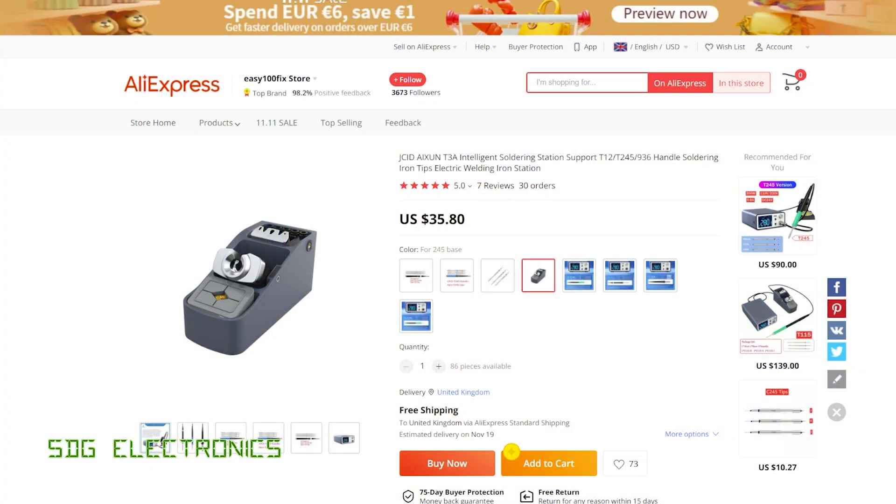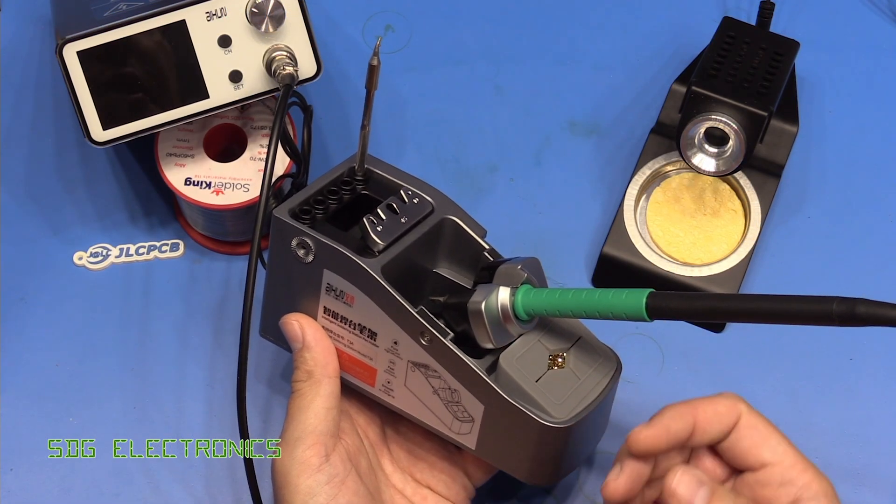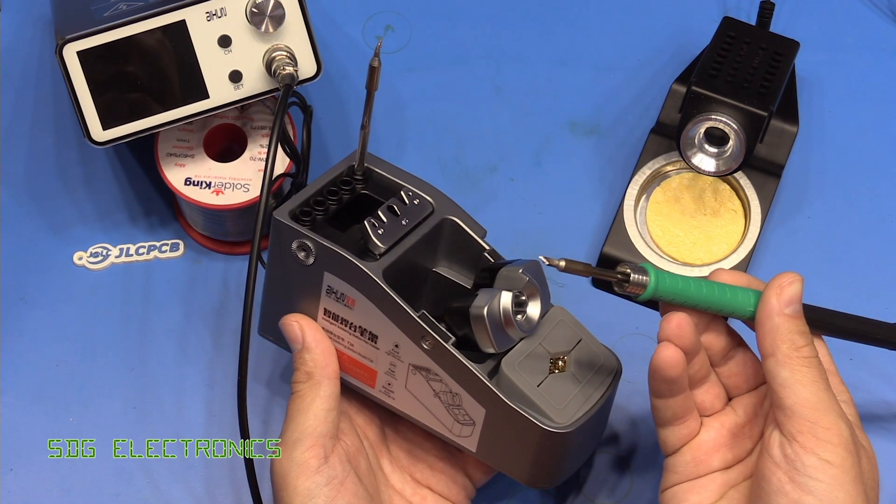Here it is on AliExpress from the EZ100 fixed store, which is where I actually bought this stand from, and also the solder station. Both of them arrived very quickly. I'll put links to these in the description. The stand itself is selling for about $35. I think this is a much better setup, much more like what we'd expect for a JBC type handpiece.